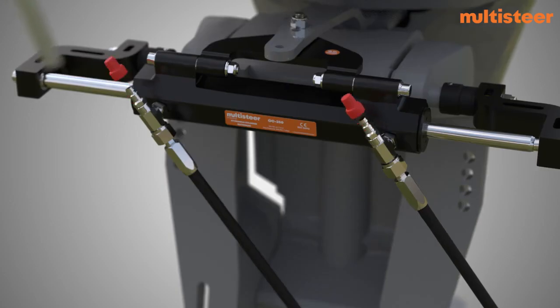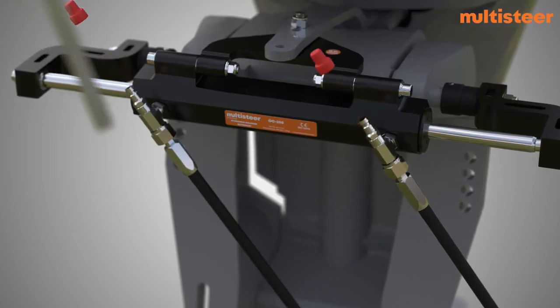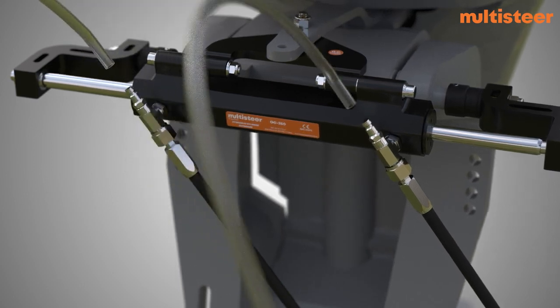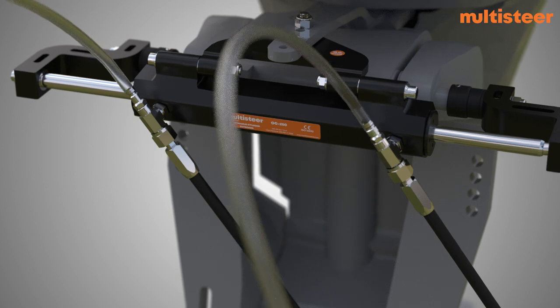Remove the protector cap of both the air bleeders. Insert the smaller pipe supplied with the cylinder into the air bleeders for collecting the oil coming out from the air bleeders during the purging process.